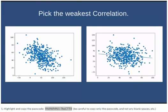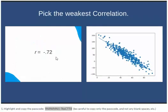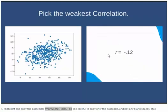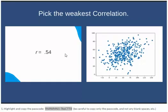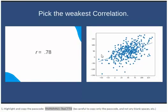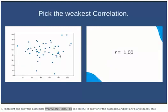We are looking at scatter plots as well as Pearson's r. We want to click on the one that represents the weakest correlation — and of course zero would be the weakest correlation possible. Stronger correlations would be positive one, that's as strong as you can get, or negative one, that's also as strong as you can get.